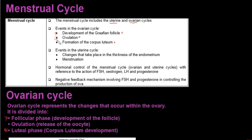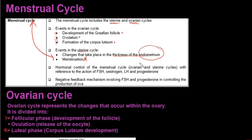The events of the uterine cycle are basically the changes that take place in the thickness of the endometrium, and also menstruation. Please note that menstruation and the menstrual cycle are not the same thing. The menstrual cycle is both the uterine cycle and the ovarian cycle, whereas menstruation happens just in the uterine cycle — it's basically the shedding of the endometrial lining. The hormones that control the menstrual cycle are FSH, estrogen, LH, and progesterone.